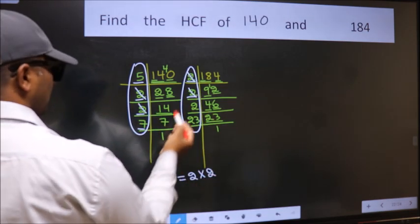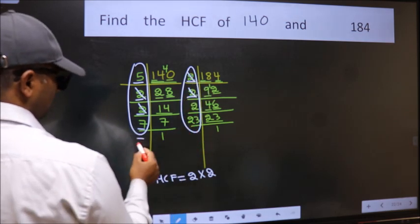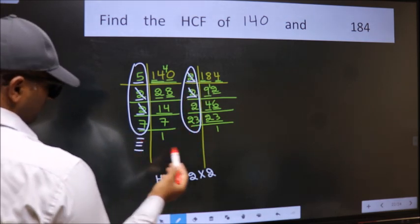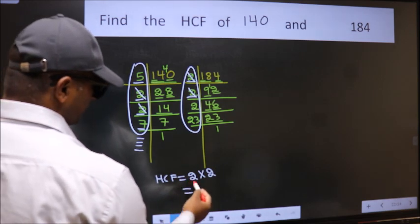Next number 7. Do we have 7 here? No. No more numbers have been left out. So our HCF is 2×2=4 is our HCF.